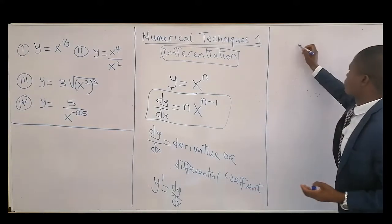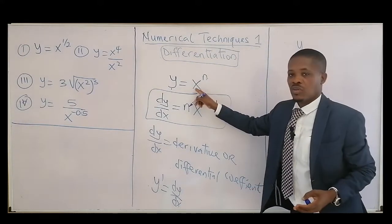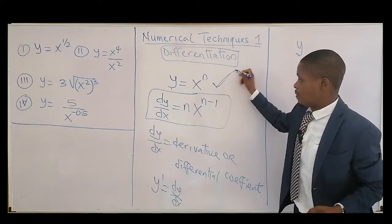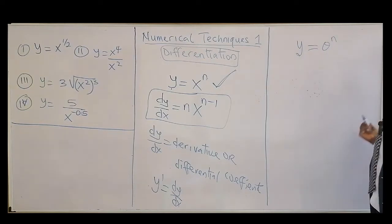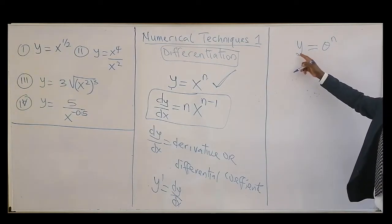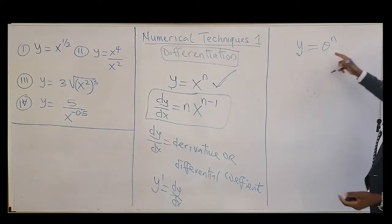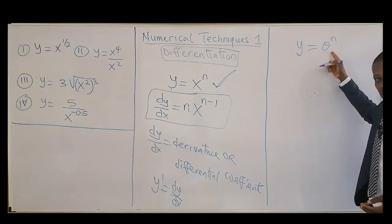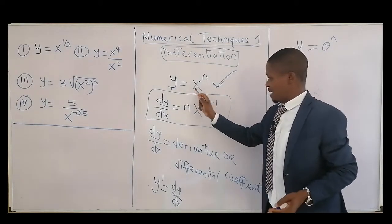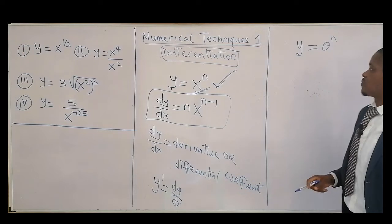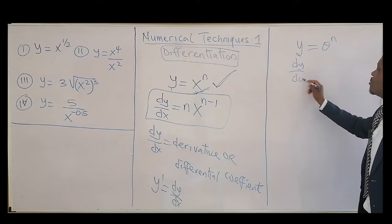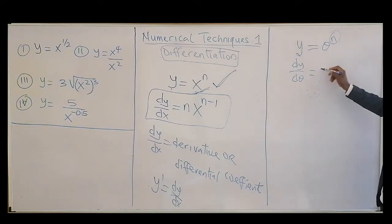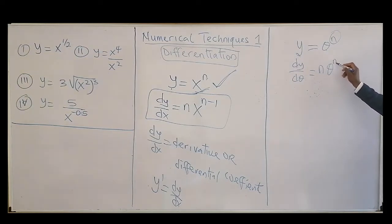What we have to note is that y in this case is a function of x. If y were a function of theta — say theta to the power n — you do the same way. In that case, y is a function of theta, so you differentiate with respect to theta, giving dy/dθ, and the power goes to the front.